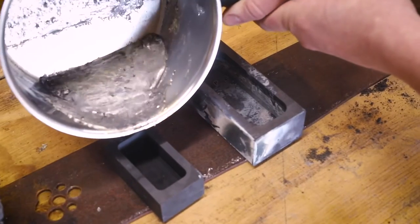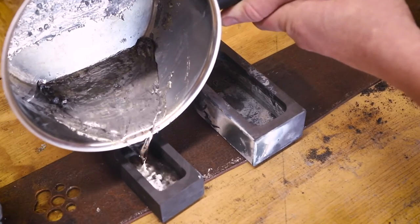The leftover is poured into a graphite mold, leaving us with a small ingot for later casts.